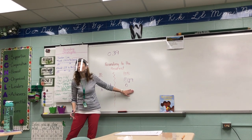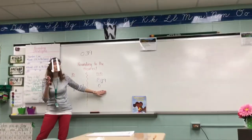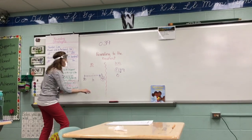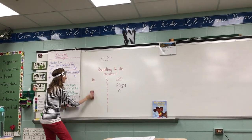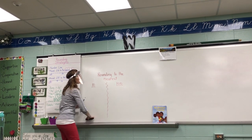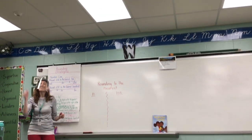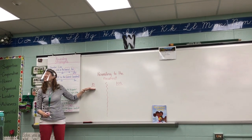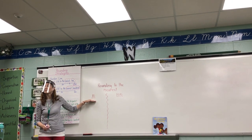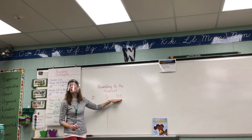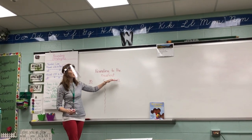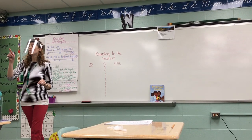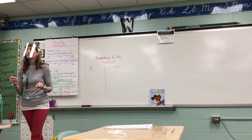We have two strategies we just got better at: number line and bump it up. Now grab your dry erase boards — you're going to practice with me right now. Divide your dry erase board into two halves. On one half, write 'ten' because we're going to round to the nearest ten. On the other half, write '100' because we're going to round to the nearest hundred on that side. Thank you Callie, Javier, Elliot for listening.